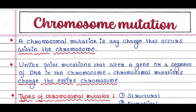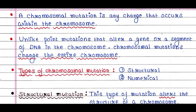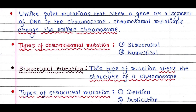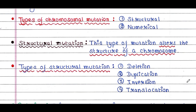Let's see different types of chromosomal mutation. First is structural and second is numerical mutation. Structural mutation alters the structure of a chromosome, and there are different types: deletion, duplication, inversion, and translocation. We will talk about them one by one.